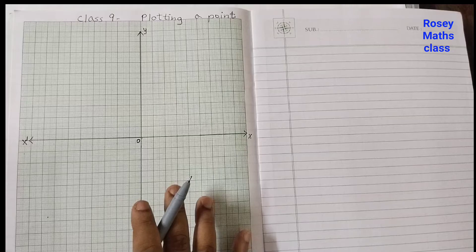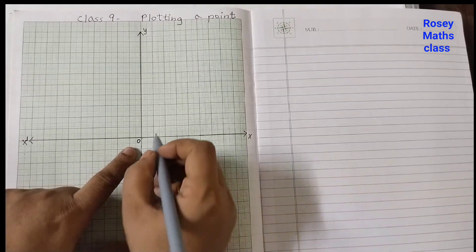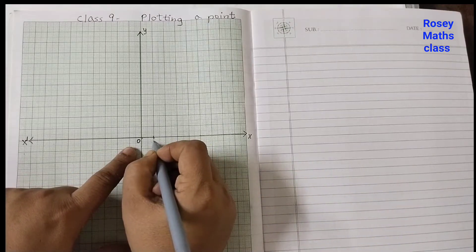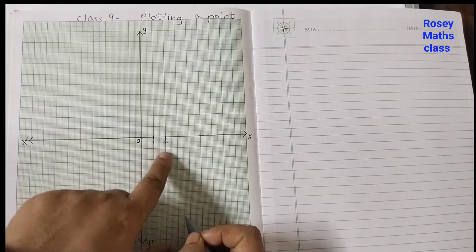This is zero. On the right hand side, this is one, two, at equal spaces. I'm doing at equal spaces: three, four, five, six, seven, eight.